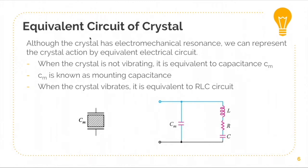One way to measure the quality of the crystal oscillator is through the Q factor. Q factor stands for quality factor and it is equivalent to 1 over R multiplied with the square root of L over C.